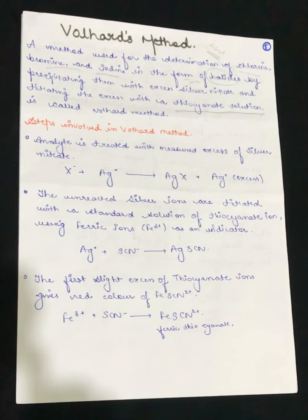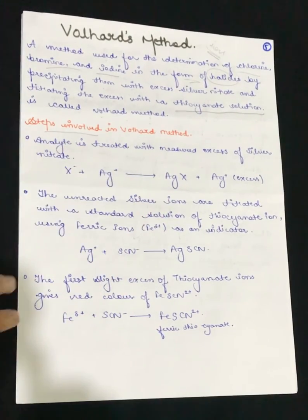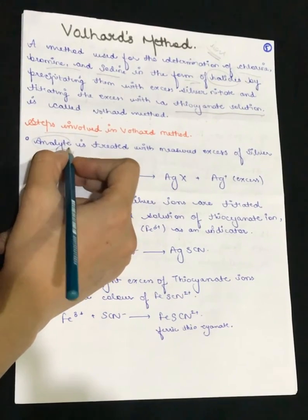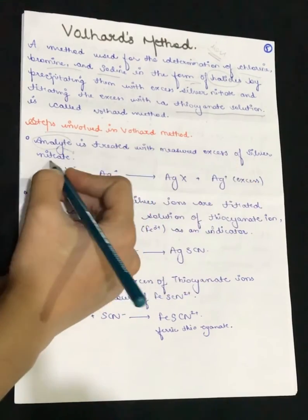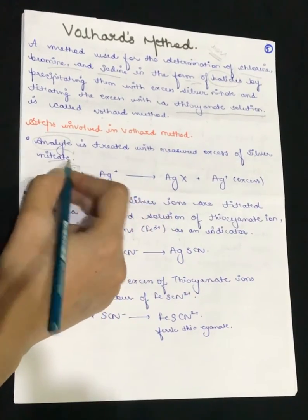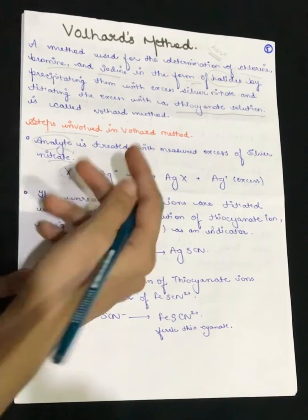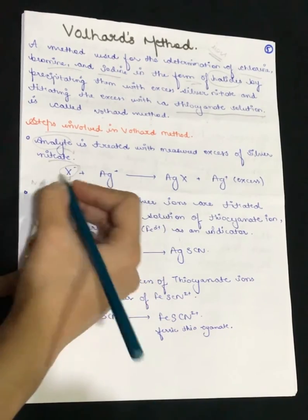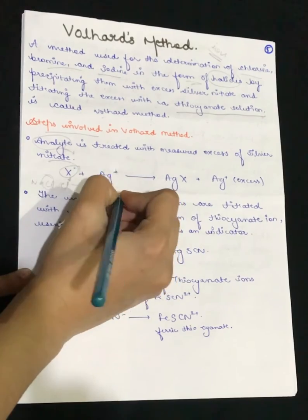We treat the sample with a measured excess of silver nitrate. What is the meaning of halide here? Suppose it is Cl⁻ — we have to estimate it. So we have Cl⁻ reacting with Ag⁺ to form a precipitate.